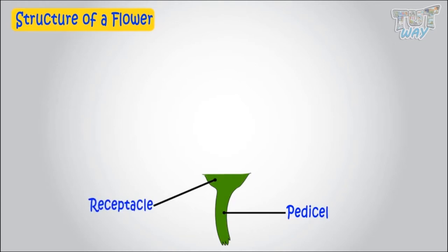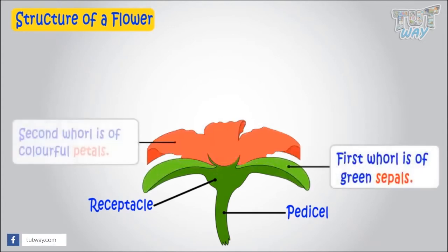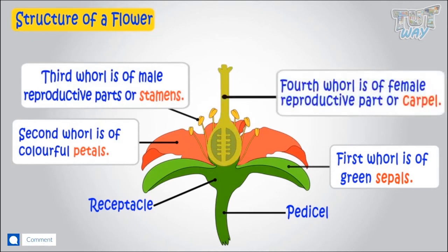Now, all other parts of the flower are arranged in four whorls. The first whorl is of sepals, the second whorl is of petals, the third whorl is of male reproductive parts, and the fourth whorl is of female reproductive parts. Let's learn each of them one by one.